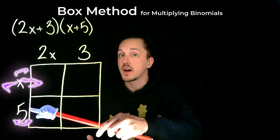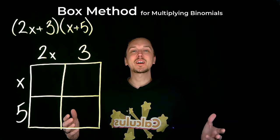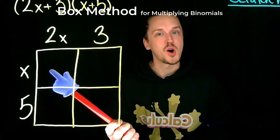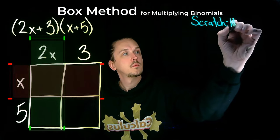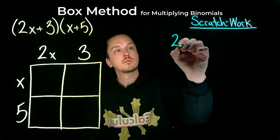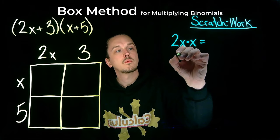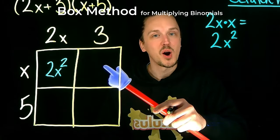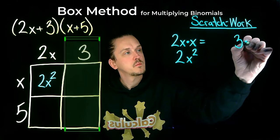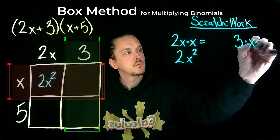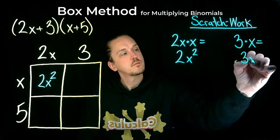Now we multiply the column value by the row value for each small box. Let's break it down box by box. In our first box, we multiply the term of the first column, 2x, by the term of the first row, x. So 2x times x gives us 2x². Moving to the top right box, we multiply 3 by x, giving us 3x.